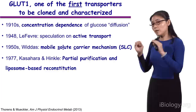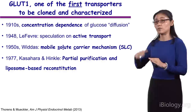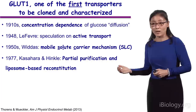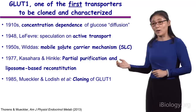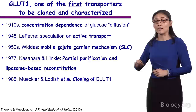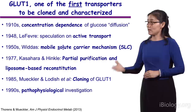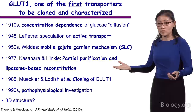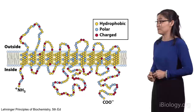In 1977, scientists were able to purify the protein component from red blood cells and reconstitute them into liposomes, reconstituting the uptake of glucose. So they named this protein component GLUT1. Then in 1985, Harvey Lodish's lab cloned GLUT1, and when the sequence was available it was clear that this protein contains 12 transmembrane helices. In the 1990s, the study effort was shifted to pathophysiological investigations as well as structural characterizations, because we'd like to understand the structure to understand its functional mechanism and disease mechanism.